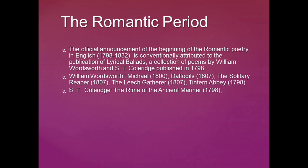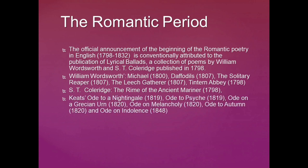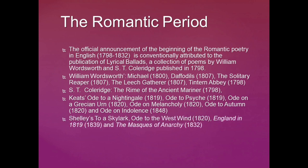S.T. Coleridge, also a friend of Wordsworth and a wonderful Romantic poet, wrote The Rime of the Ancient Mariner. John Keats belongs to the second generation of Romantic poets. His odes are very famous, marking him a truly Romantic poet: Ode to a Nightingale, Ode to Psyche, Ode on a Grecian Urn, Ode on Melancholy, Ode to Autumn, and Ode on Indolence are the typical odes of Keats.